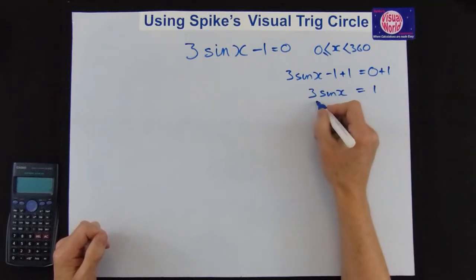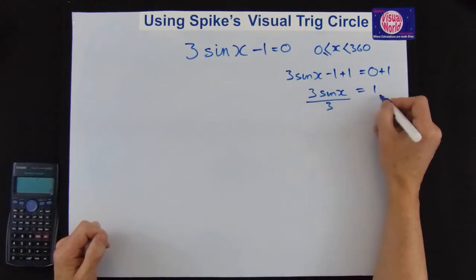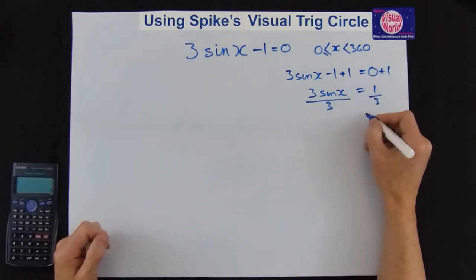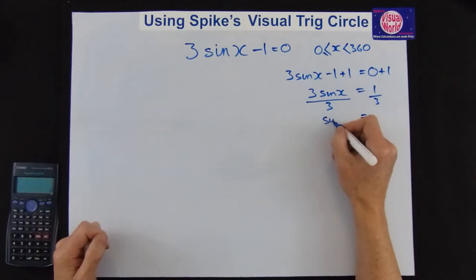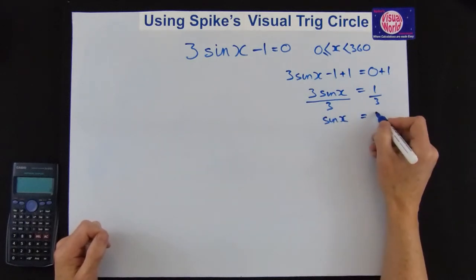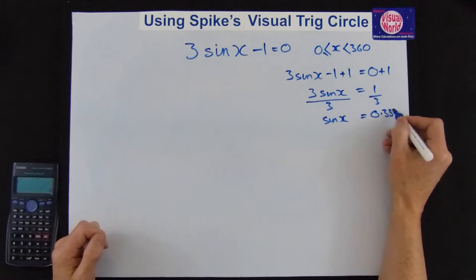We now get left with 3 sin x equals 1. We've got 3 to get rid of it. It's multiplying. Do the opposite to get rid of it. Divide so you do the same thing to both sides. And we get sin x equals 0.333.